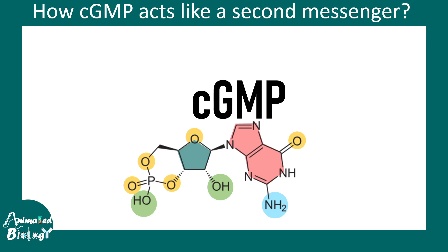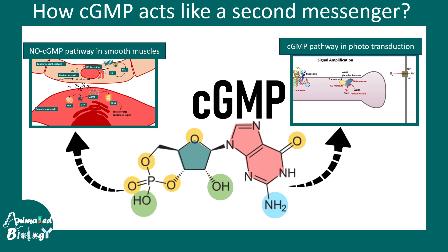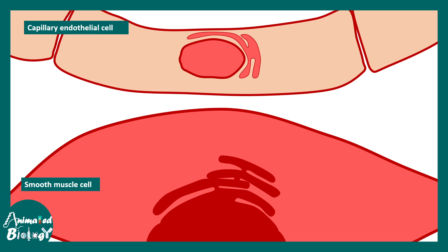Cyclic GMP is important for the nitric oxide–cyclic GMP pathway in smooth muscles, and also for phototransduction. We are going to look at the role and importance of cyclic GMP in these two biological contexts, starting with a smooth muscle and its associated capillary.